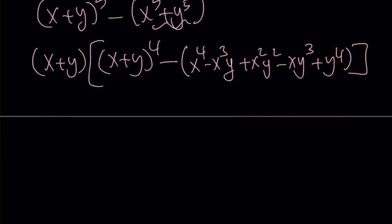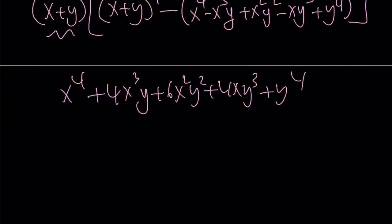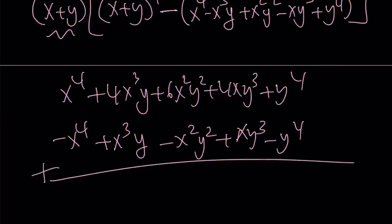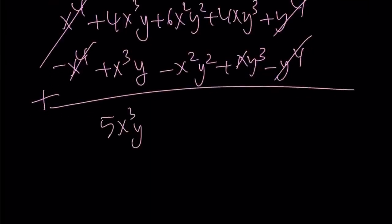Let's expand x plus y to the fourth and subtract. The coefficients from Pascal's triangle fourth row are 1, 4, 6, 4, 1. So x plus y to the fourth is x to the fourth plus four x cubed y plus six x squared y squared plus four x y cubed plus y to the fourth. Since we're subtracting, let's negate everything and add: negative x to the fourth plus x cubed y minus x squared y squared plus x y cubed minus y to the fourth. Adding these up, things cancel again, and the sum is five x cubed y plus five x squared y squared plus five x y cubed.